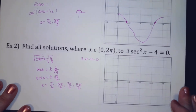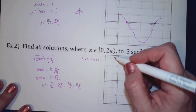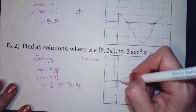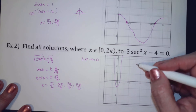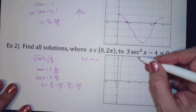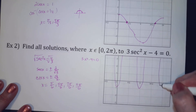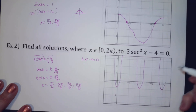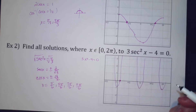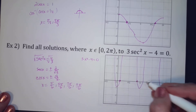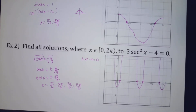And if you graph this, it's going to look kind of like this — coming up and over, and doing it again. Look at your answer: there's your pi over 6, there's your 5pi over 6, there's your 7pi over 6, and there's your 11pi over 6. So you can see the answers that you're supposed to get.